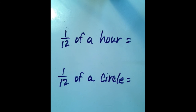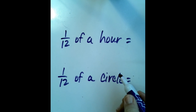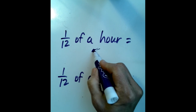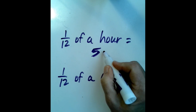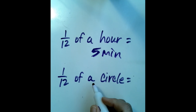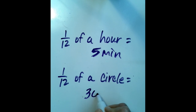Let's go back to the chart we were making. One-twelfth of an hour: if an hour is 60 minutes, then one-twelfth of that means each section we drew is equivalent to 5 minutes. And our protractor measurement showed us that 5 minutes corresponds to a 30-degree angle.